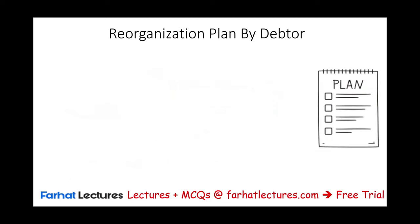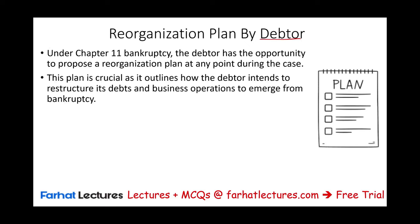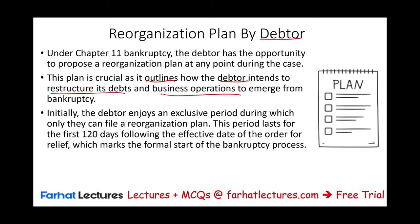The reorganization plan is the roadmap — it's what's proposed, and it's usually proposed by the debtor. Under Chapter 11, the debtor has the opportunity to propose a reorganization plan at any point during the case. The plan is crucial because it spells out how the debtor intends to restructure their debt and business operations to exit bankruptcy. The debtor enjoys an exclusive period of 120 days from the effective date of the order of relief to file this plan.